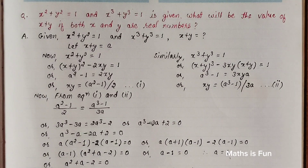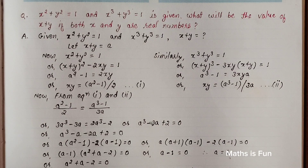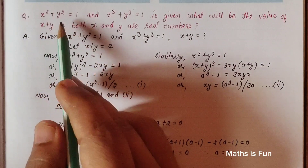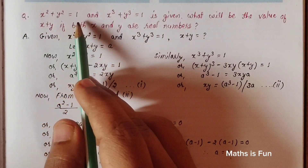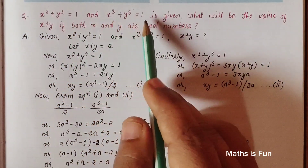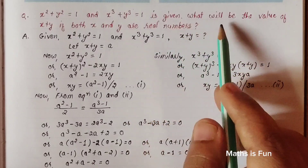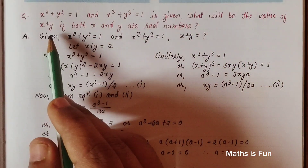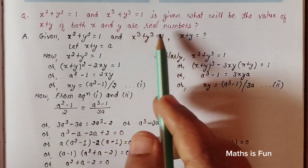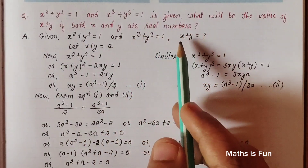Hello math lovers, we have an algebra problem in this video. Our question is: x² + y² = 1 and x³ + y³ = 1 are given. What will be the value of x + y, if both x and y are real numbers?